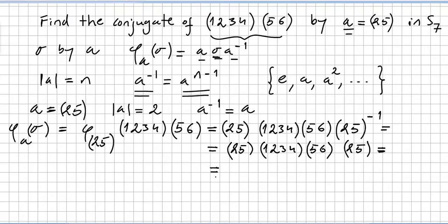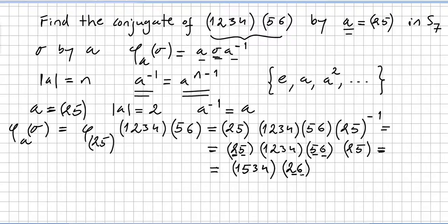Now complete the cycles: 2 goes to 5, then 5 goes to 6, so 2 goes to 6. It's pretty simple — just check the previous videos for the full procedure to see what the final conjugate cycle is.